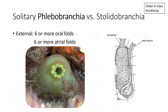If you have six or more folds in the oral siphon — as in this left photograph — and if you also have six or more folds in the atrial siphon, so you need to count the folds on both siphons, then you're dealing with a Phlebobranchia. Again: six or more oral folds and six or more atrial folds means order Phlebobranchia.